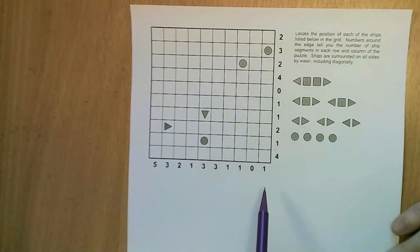The numbers around the edge of the grid tell you how many ship segments there are in that row or column, so for instance this one has got five segments in it, this one has none at all.